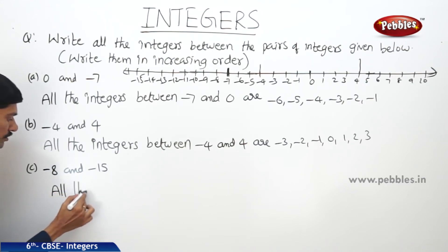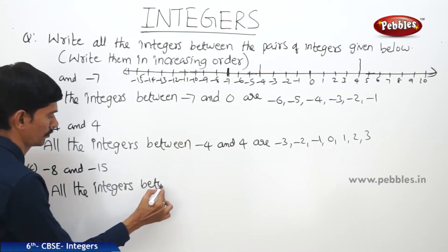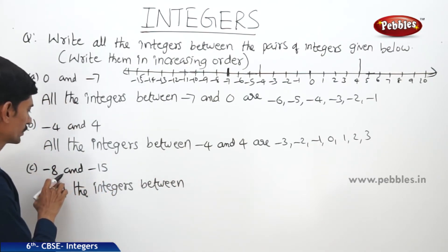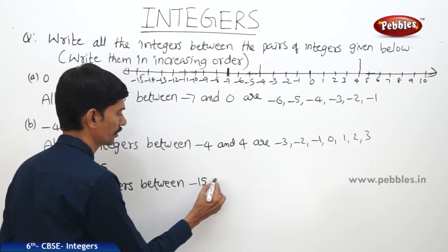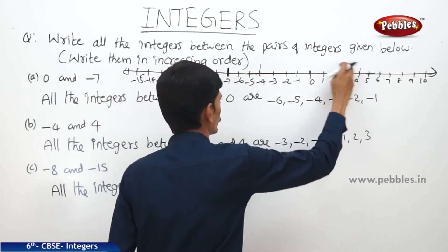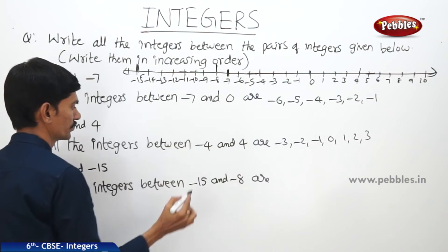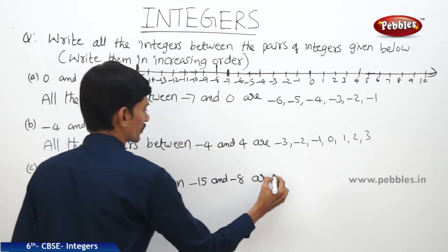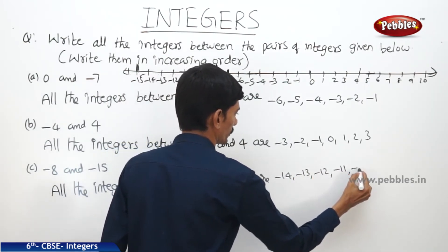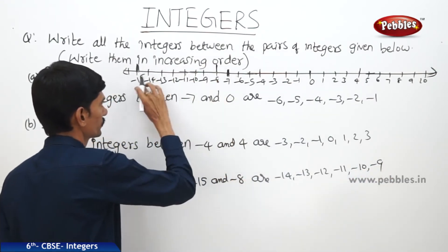Now the next question — all the integers between minus 15 and minus 8. Here the smallest is minus 15 and the biggest is minus 8. The integers between minus 15 and minus 8 are: minus 14, minus 13, minus 12, minus 11, minus 10, minus 9. These are the integers between minus 15 and minus 8.